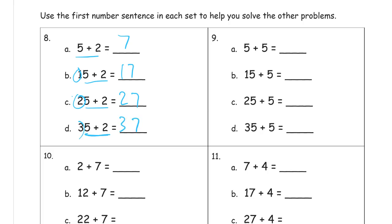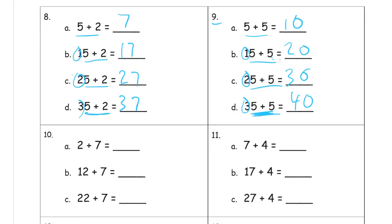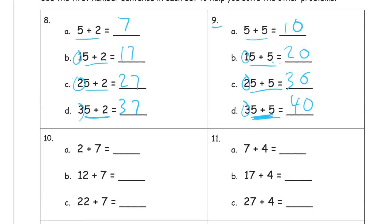Over here we have five plus five, which is everybody's favorite because it makes an easy ten. Five plus five is ten. Then it's fifteen plus five — you see that same five plus five with just one more ten to add, so it's twenty. Now adding two more tens to that ten: twenty, thirty. And three more tens: ten, twenty, thirty, forty. You should be noticing this pattern — adding one more ten each time going down.